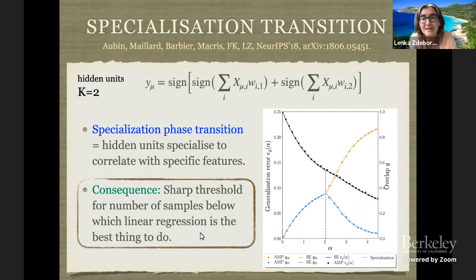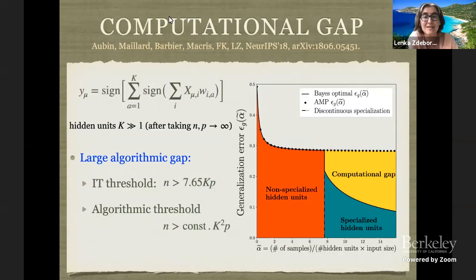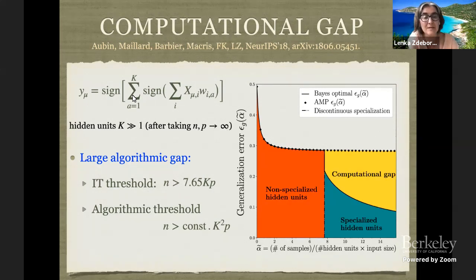So this is a model where you can put some mathematics on that observation. Since the replica formula comes in the form of an integral over K by K matrices, solving it for K bigger than two gets a bit cumbersome, but it simplifies when K is large.